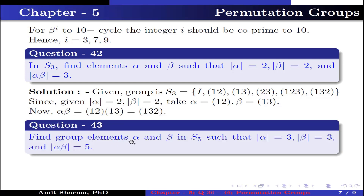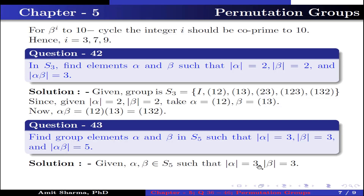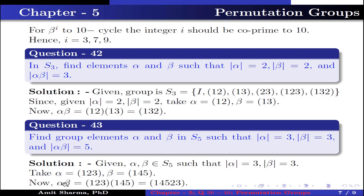Question number 43. Find group elements alpha and beta in S5 such that order of alpha is 3, order of beta is 3, and order of alpha∘beta is 5. Take alpha = (1,2,3) and beta = (1,4,5). The product alpha∘beta = (1,2,3)∘(1,4,5) = (1,4,5,2,3), because: 1 maps to 4, 4 maps to 5, 5 maps to 2, 2 maps to 3, 3 maps to 1 — the cycle is completed. It is a 5-cycle permutation, so the order of alpha∘beta is 5.